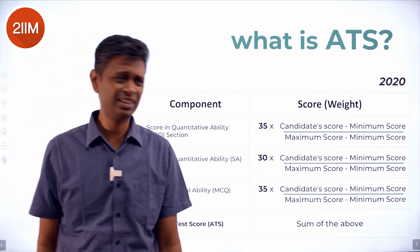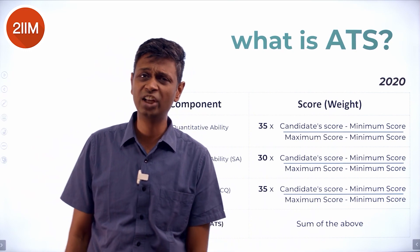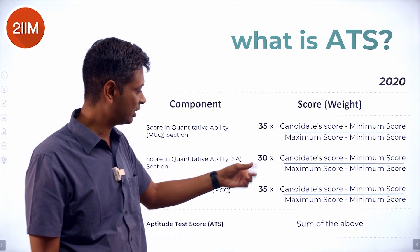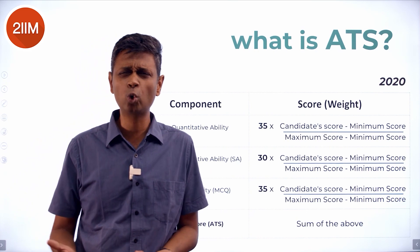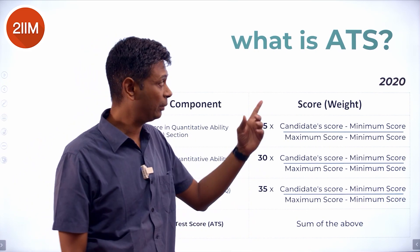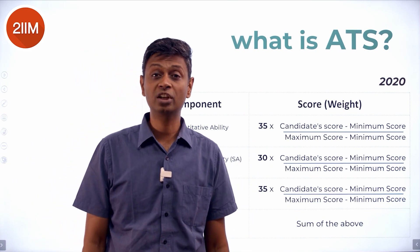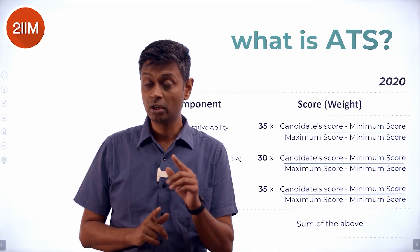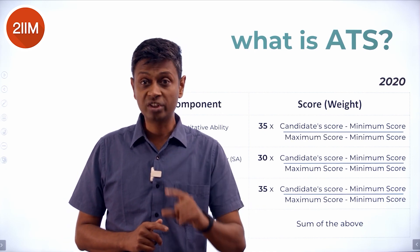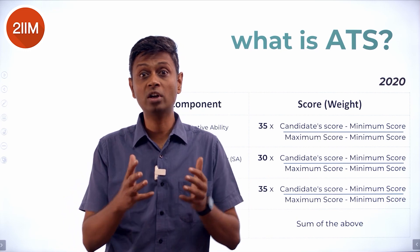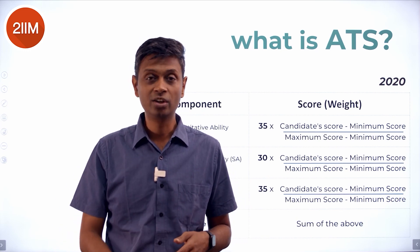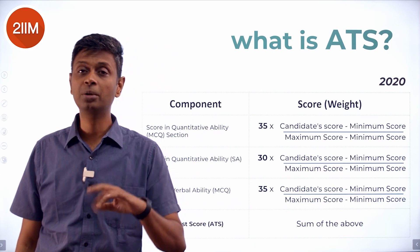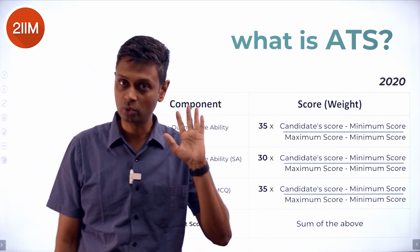The weightage from the previous year used the same calculation and basis. The year before that it was 35, 30, and 35 — effectively about one third each. In 2020 they said three sections, one third each. In 2021 they said: the two quant sections can't both get one third, because then quant becomes two thirds total. So they made it half and half — 50% for verbal and 25/25 for quant MCQ and quant short answer.